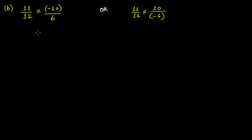In this example the multiplication is between 11 over 12 and minus 10 over 6. If you notice in this problem, the only difference is that here you have the negative sign in the numerator but in this case you have the negative sign in the denominator, and all the rest of the values are the same.